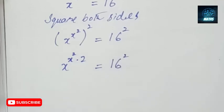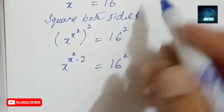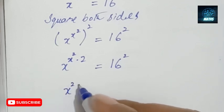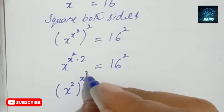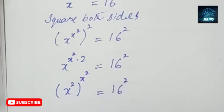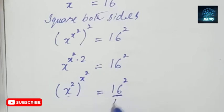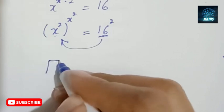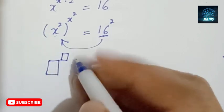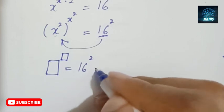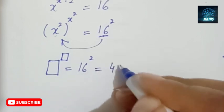Next, I can interchange and write it as x to the power 2, to the power x to the power 2, equals 16 squared. Here, what is required is I have to find the value of x. So I need to write this in the same form — that is, this term to the power the same term.